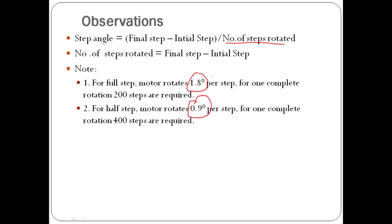If you set it for full step, the motor has to complete 200 steps for one complete rotation. If set to half step (0.9 degrees), the motor has to rotate 400 steps for one complete rotation.